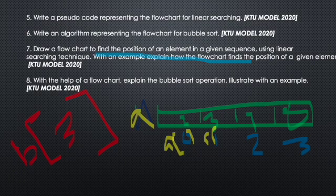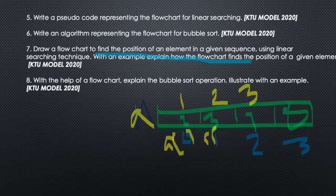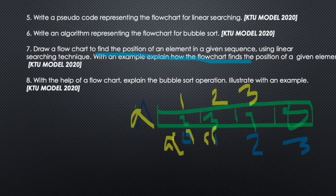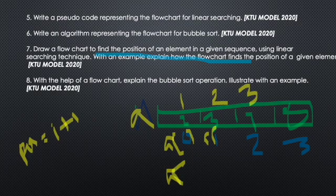The indexes are 0, 1, 2, 3. A of 3 is the fourth element. In order to find our position, if we add 1 to the index, position equals index plus 1. We use A of i. If we use A of i, then i plus 1 is the position.